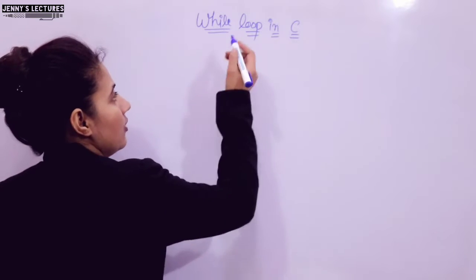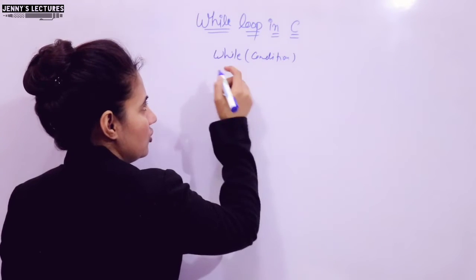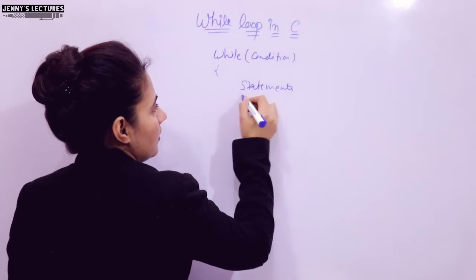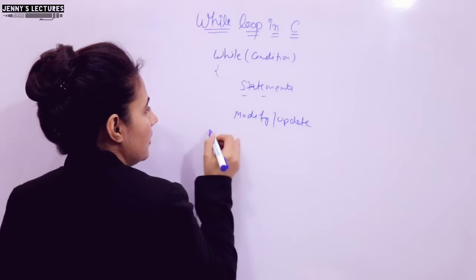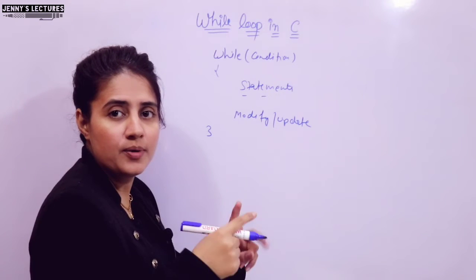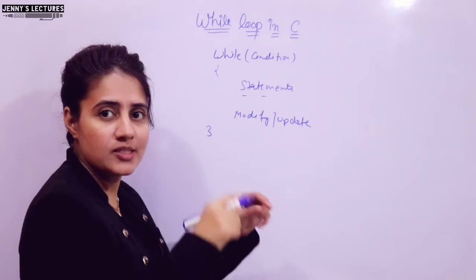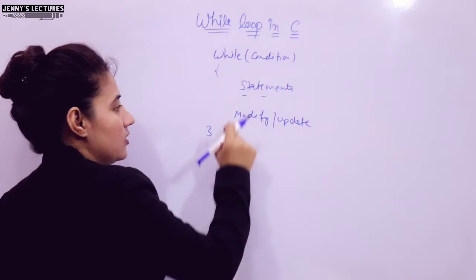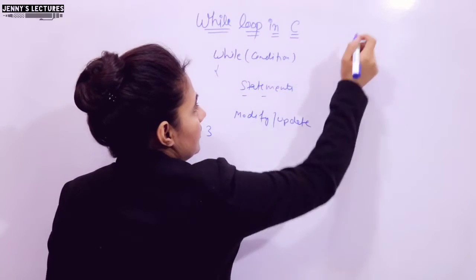Let us discuss how many ways we can write while loop. First, the general syntax: we write the `while` keyword, then a termination condition, then the body of the loop containing statements and the modify or update expression — increment or decrement. The initialization is before the condition. All three things important for any loop: initialization, termination condition, and modify/update expression. In a for loop we write all three at one place, but in while loop we write them at different places.